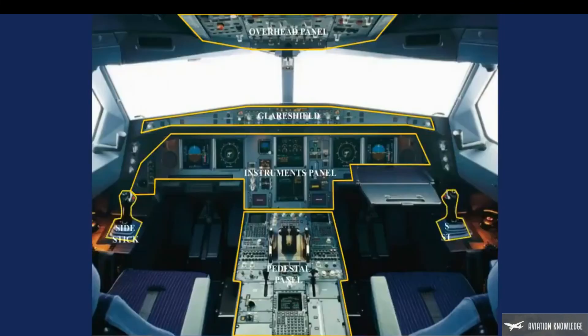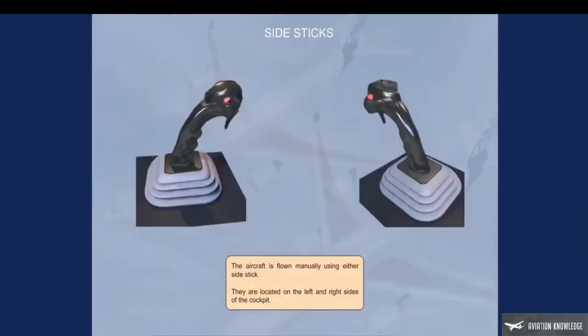Finally, click on either side stick area to display them. The aircraft is flown manually using either side stick, located on the left and right sides of the cockpit.